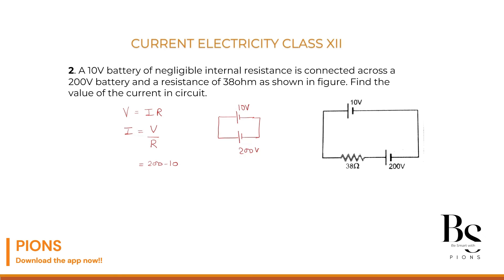The effective voltage in the circuit is 190 volts, and the effective resistance is 38 ohms. So current I equals 190 divided by 38, which equals 5 amperes. Therefore, 5 ampere is the current flowing in this whole circuit.